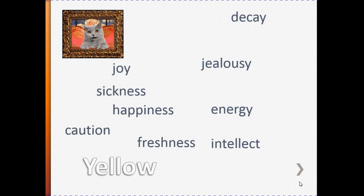Dingy, dark, dull yellow represents caution, decay, sickness, and jealousy. Light yellow is often associated with intellect, freshness, and joy.